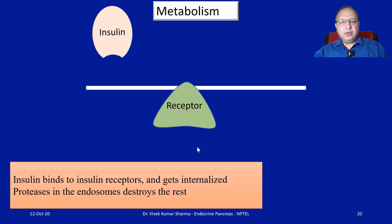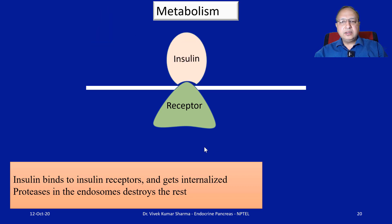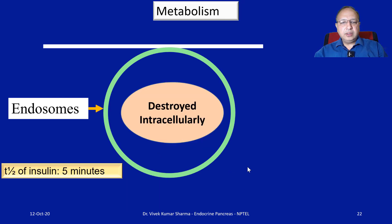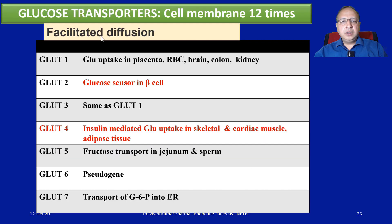Coming to insulin metabolism: once insulin binds with its receptor and mediates its action, it gets internalized by proteases in endosomes and is destroyed there. The half-life of insulin is very short — just five minutes. Once the action is over, it will be endocytosed and destroyed intracellularly. Coming to glucose transporters: there are seven different types, all functioning by facilitated diffusion, and all cross the membrane 12 times — also called 12-pass transporters.